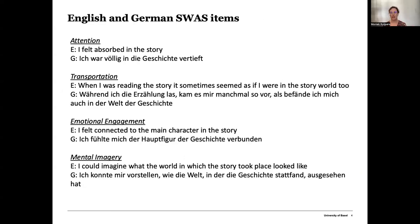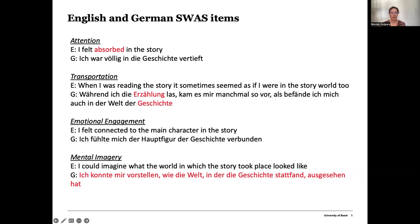I would like to zoom in on some differences in expressions between English and German when it comes to the experience of absorption in the two versions of the SWAS. Straight translations of items from English to German led to some overcomplicated grammar in the German versions. For example, in the mental imagery item, the translation for 'I could imagine what the world in which the story took place looked like' resulted in a sentence that is not the most colloquially used in everyday language. In German there are also various different words for 'story,' which can be used to further specify what was meant, meaning the German items are more detailed than the English ones.